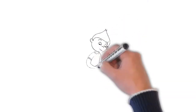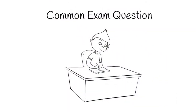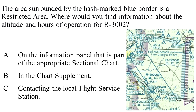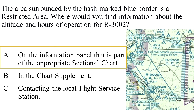Let's take a look at some common FAA exam questions. The area surrounded by the hash-marked blue border is a restricted area. Where would you find information about the altitude and hours of operation for R-3002? A) on the information panel that is part of the appropriate sectional chart, B) in the chart supplement, or C) contacting the local flight service station. The answer is A — on the information panel that is part of the appropriate sectional chart.